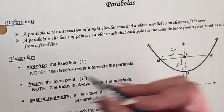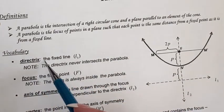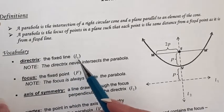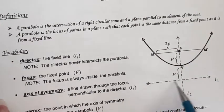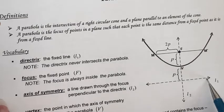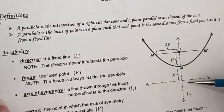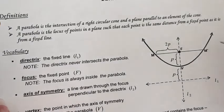The first thing you need to know is the directrix. The directrix is a line — here labeled L1. The directrix will never intersect the parabola, and if the parabola is opening up, the directrix faces the opposite way of the opening.